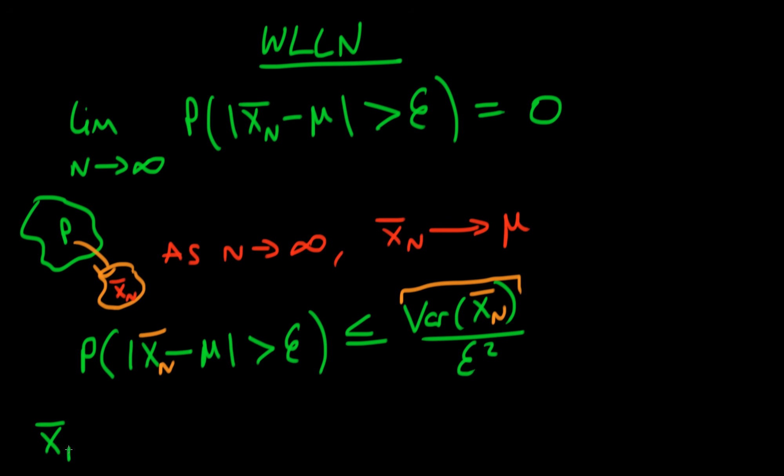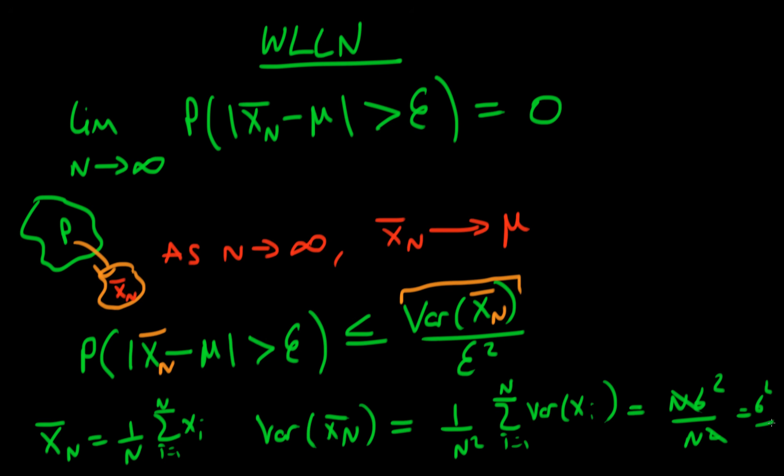Well, what's x̄ₙ? x̄ₙ is just equal to 1 over n times the sum from i equals 1 to n of xᵢ, which when I take the variance of both sides, because I don't have to worry about the covariance terms due to the fact that I've got iid observations, I get that the variance of x̄ₙ is just equal to 1 over n² times the sum from i equals 1 to n of the variance of xᵢ, where each xᵢ has a variance of σ², so I just get nσ² divided by n². So I'm just left with σ² over n as the variance of the sample mean.